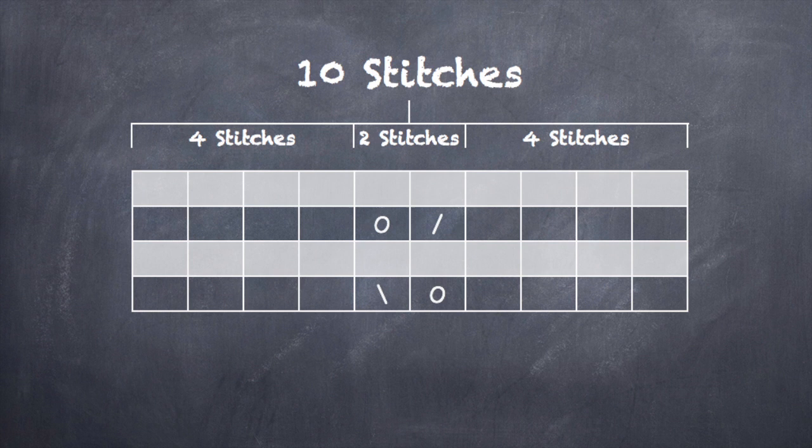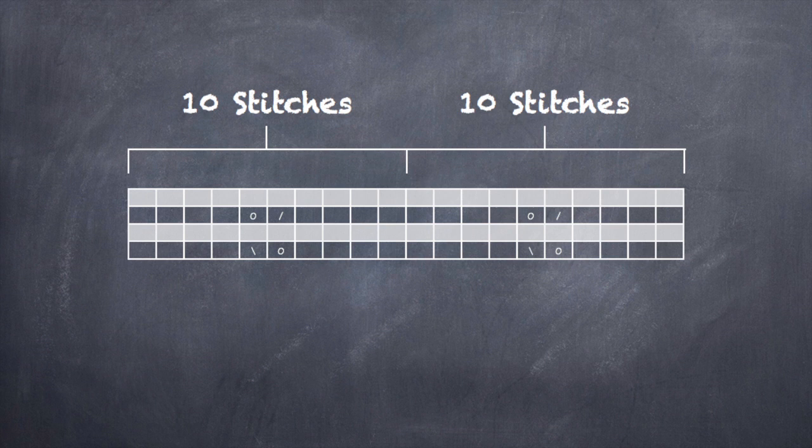Now, if we were to then cast on in multiples of 10 here, we would end up with something kind of like this. But there's another problem. In a center, we've actually duplicated those four stitches. We have too many in between each set of stitches.